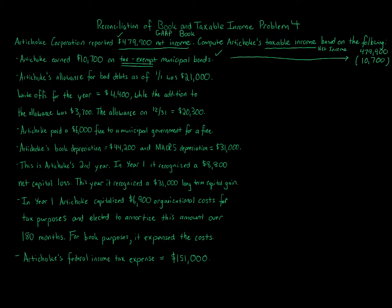Now moving on to bad debt expense. Artichoke's allowance for bad debts as of January 1st was $21,000, write-offs were $4,400, and the addition to the allowance was $3,700, leaving a December 31st balance of $20,300. This is a calendar year business. For financial accounting GAAP purposes, we use the allowance method; for tax purposes, the only method allowed is the direct write-off method.